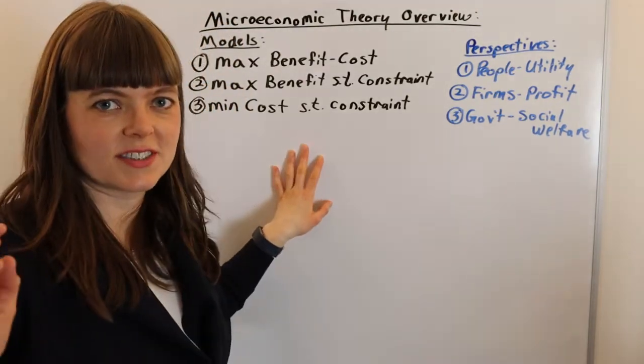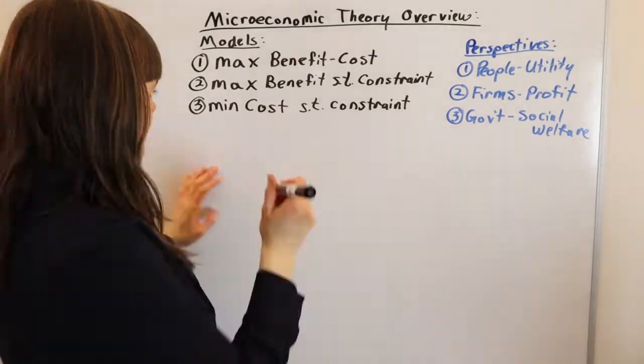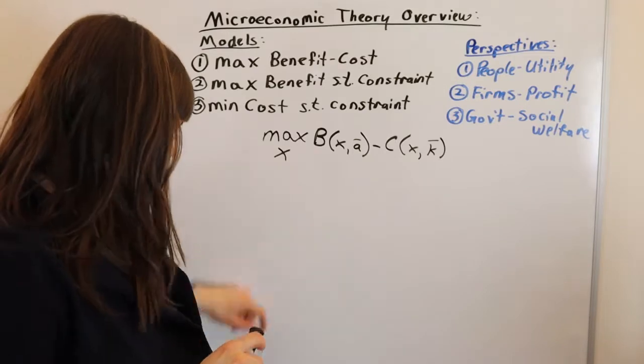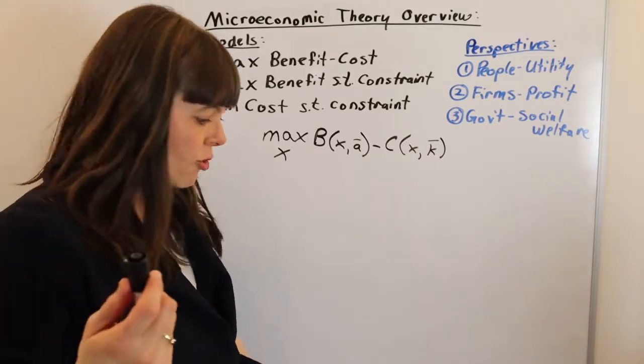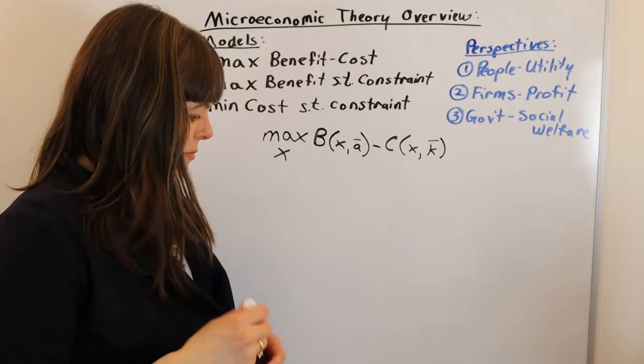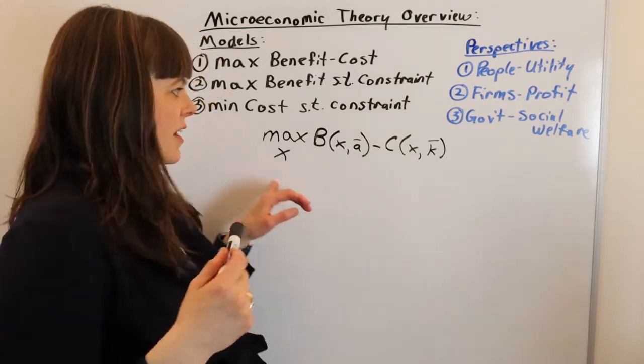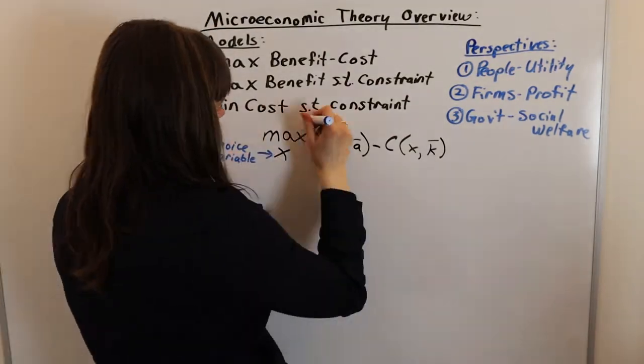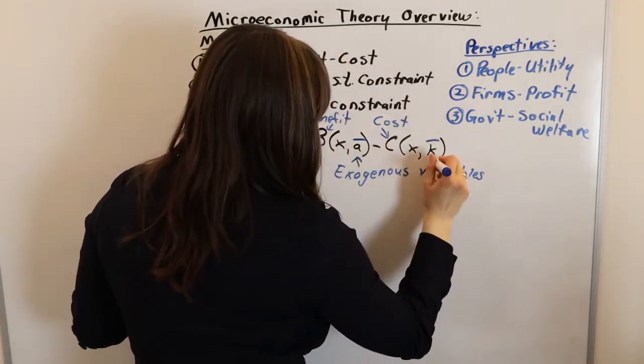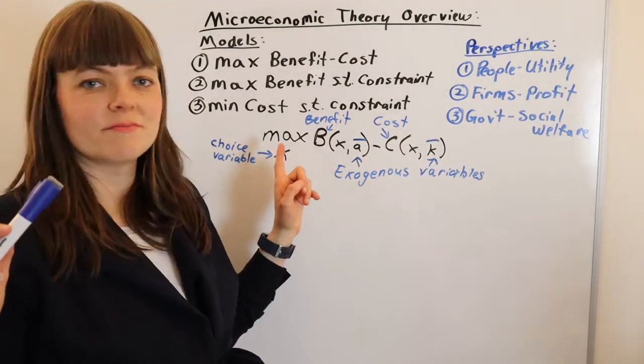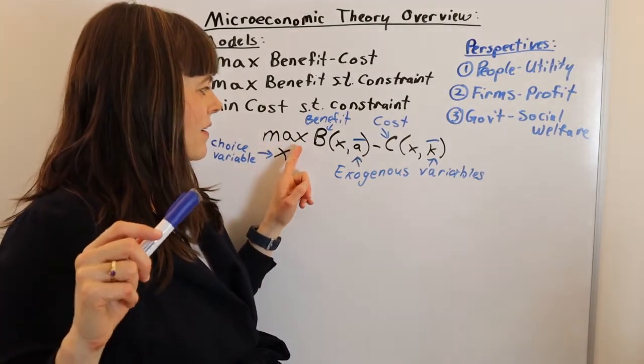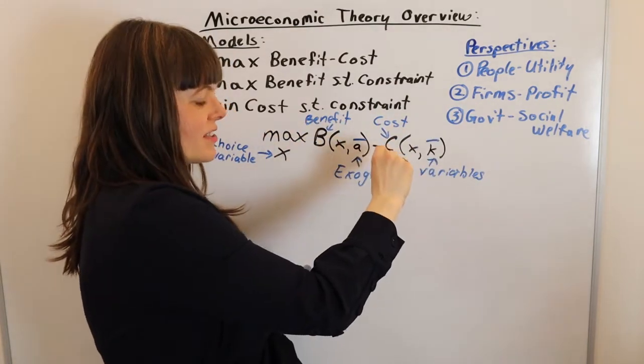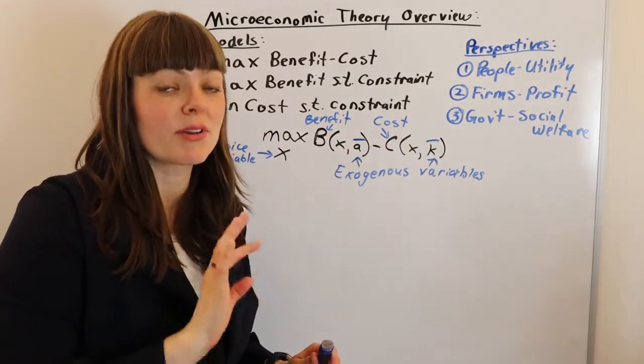Before I do this, let me set up the classic model. We have our classic model with its parts. If you're going to learn microeconomic modeling, you want to be proficient in understanding the different parts of a model. So let's label these. We've got our objective function, which is the thing we're trying to maximize: benefit minus cost.